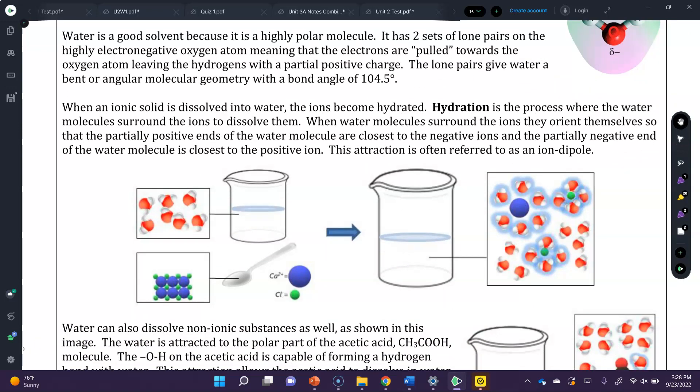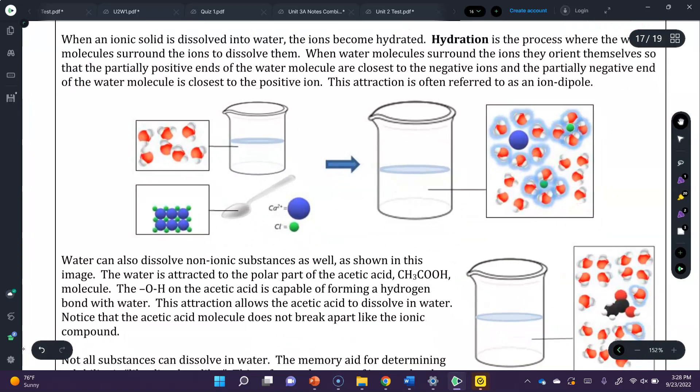Water is a good solvent because it is a highly polar molecule. It has two sets of lone pairs on the highly electronegative oxygen atom, meaning that the electrons are pulled towards the oxygen, leaving the hydrogens with a partial positive charge. The lone pairs give water a bent or angular molecular geometry, which results in a bond angle of 104.5 degrees.